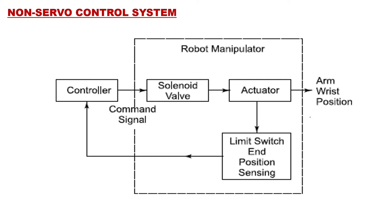In the block diagram of the non-servo control system, there is no feedback from output to input — it is a simple, straight, open loop system. At the beginning of the cycle, the controller, which is a processor, sends a signal to the control valve — a solenoid valve. This control valve is part of the robot manipulator.